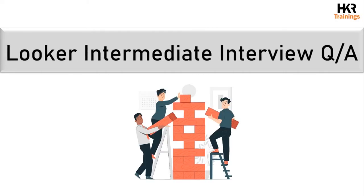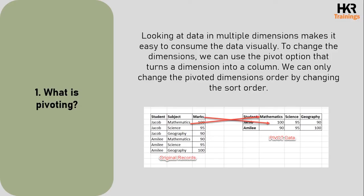The first intermediate question is: what is pivoting? Looking at data in multiple dimensions makes it easy to consume the data visually. To change the dimensions we can use the pivot option, which turns a dimension into a particular column. We can only change the pivoted dimension's order by changing the sort order.